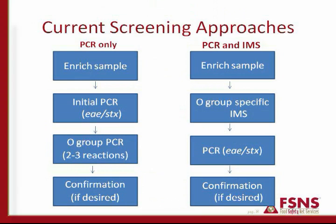There are two screening approaches available for STEC testing. The first is a PCR-only approach. The basic protocol is to enrich the sample, then do an initial PCR for EAE only, or for EAE and STX concurrently, giving an initial screen result. Then you perform an O group PCR — if that tests positive, that gives you the potential positive. At this point you've already done three or four PCR reactions, and then if desired you can proceed with confirmation.